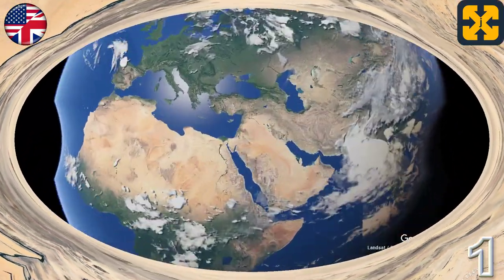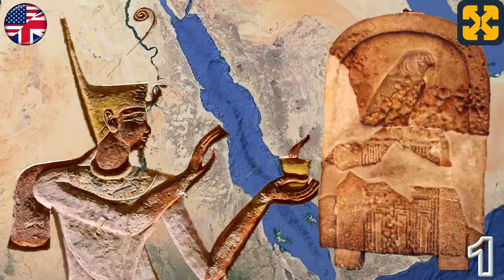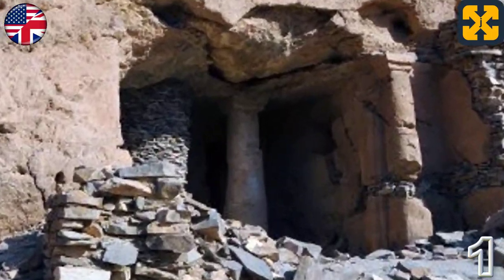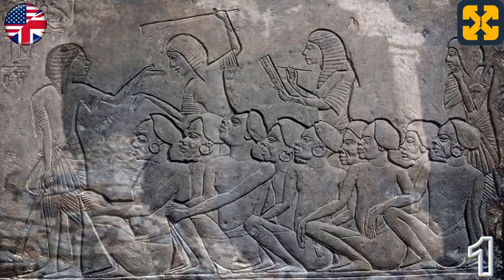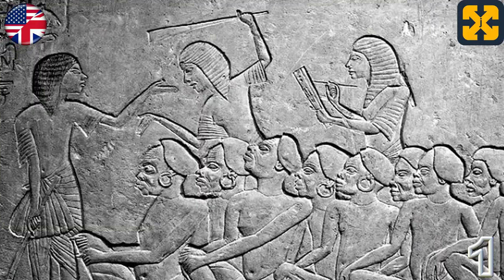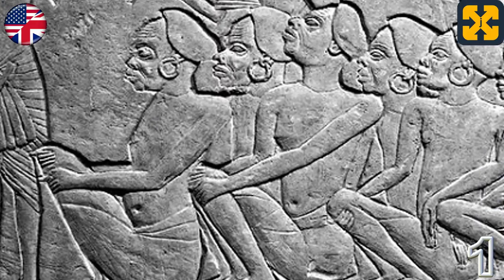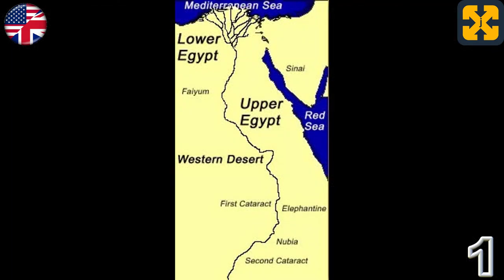As for the nomadic peoples, it is known that Aha received tribute from the Libyans and that his successor Djer made expeditions as far as the Red Sea. These expeditions were generally linked to the possession and exploitation of the mines of the region. There is also evidence of campaigns in Den's time to the Sinai for the control of mines, and against the Libyans.